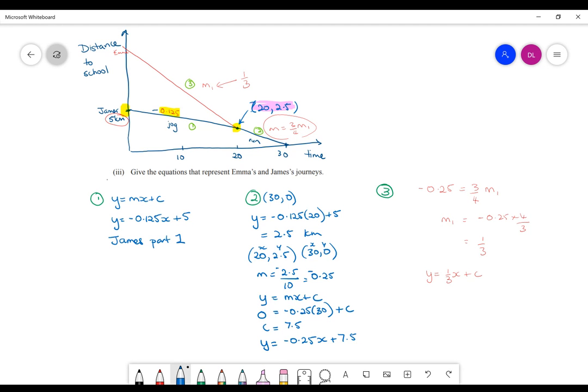So let's try that. So we've got the y is 2.5 equals 1 third times 20, which is the x value, plus c. And if you work all of that out, it will come out to be 2.5 minus...